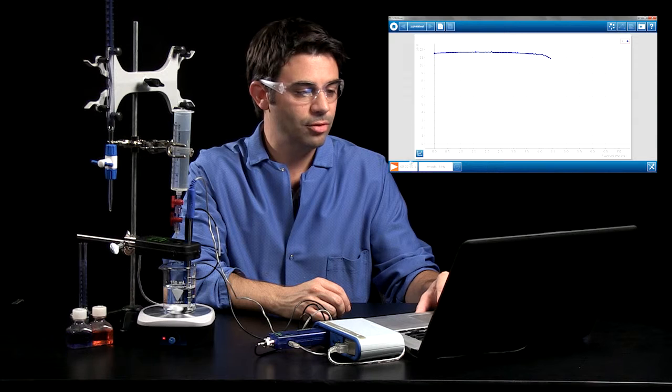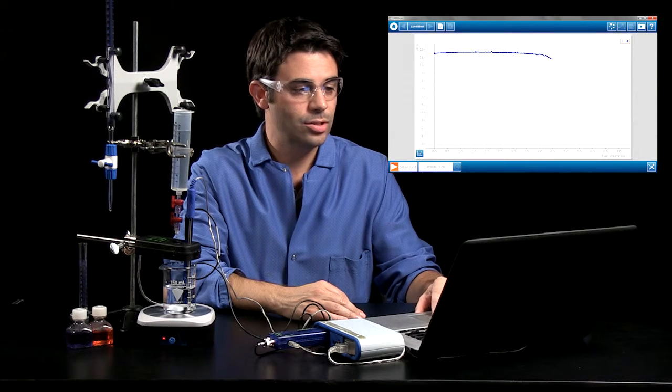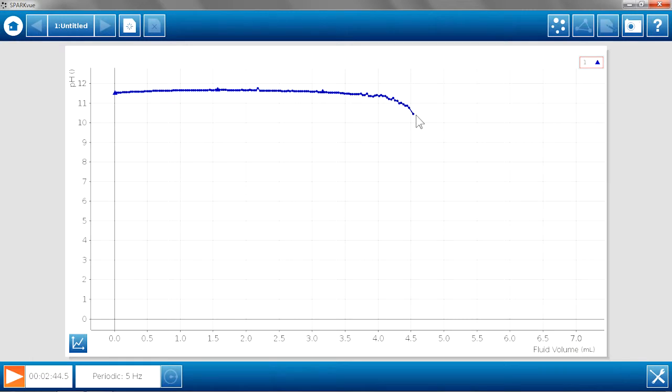So we can see after a couple of minutes of data collection, the pH is starting to gradually go down. And now it's going down steeper. And now we see those big drops in pH that are indicative of the equivalence point being reached. And we'll let this go for a little bit longer to round out that pH curve.